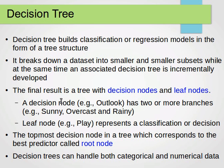A decision node, for example, if you remember our weather dataset, it can be the outlook. It can have two or more branches — for outlook, for example, we have three branches: we can branch on sunny, overcast, and rainy. For a leaf node, for example, to play or not to play — a leaf node represents a classification or a decision. So a leaf node has no branches; we only have a class or classes there.